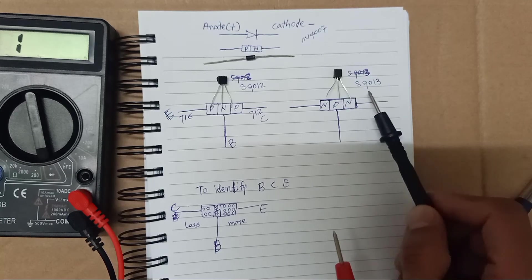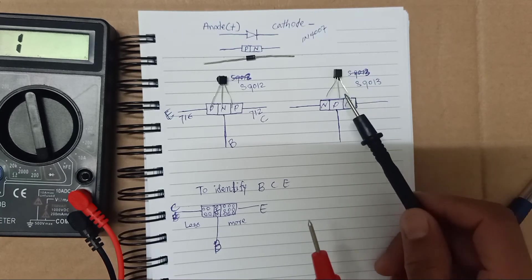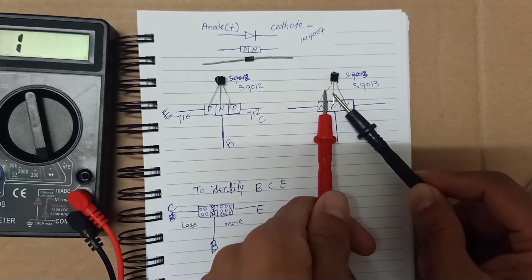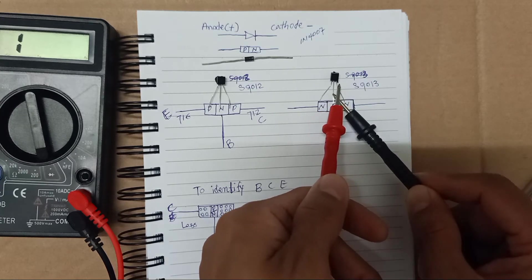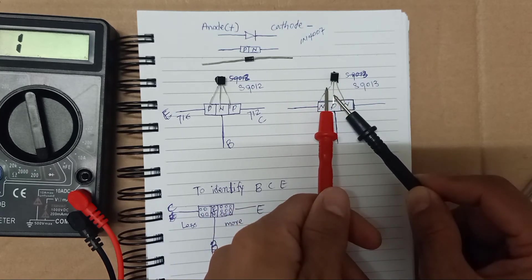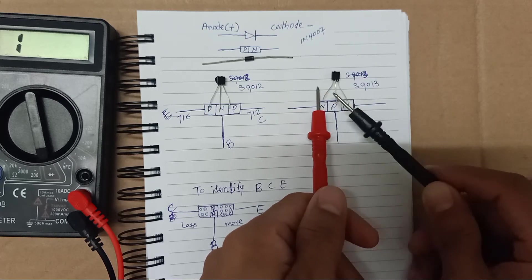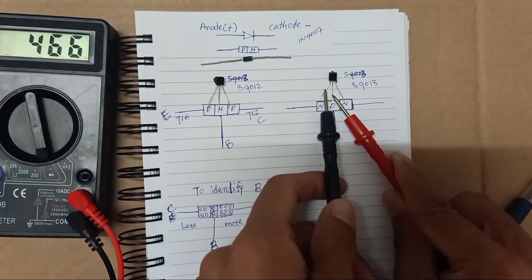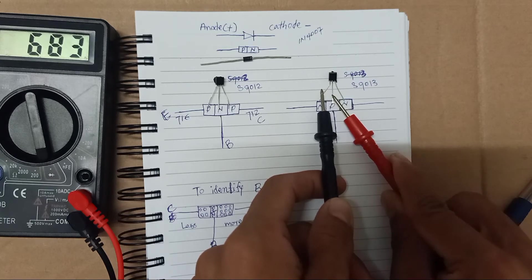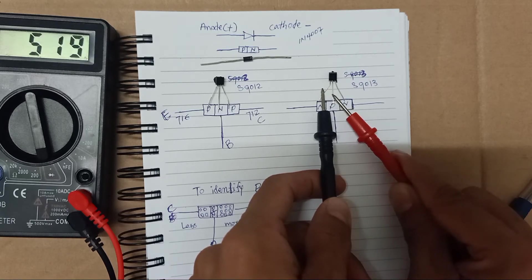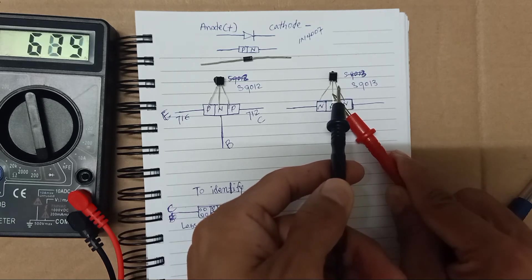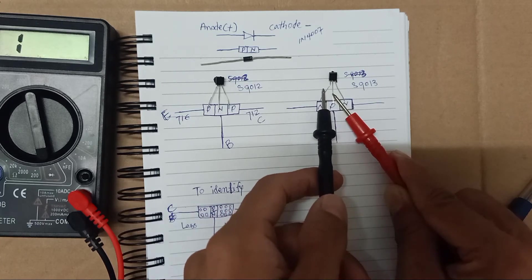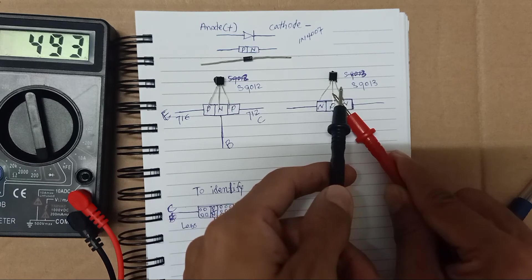This one is S9013. To identify whether it is NPN or PNP, I test again. With the negative in the middle pin and positive on the others, I get no reading — so this is not PNP. Then I change to positive in the middle and put the negative on the others — NPN — and I get a reading. So this transistor is NPN.